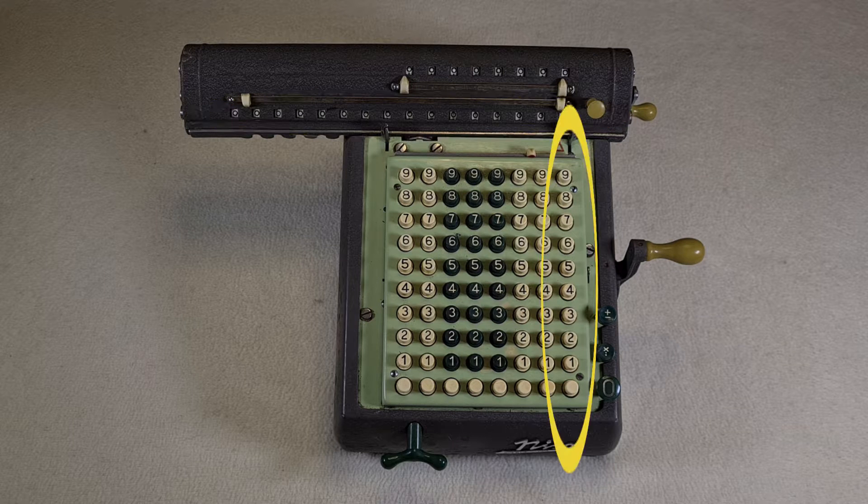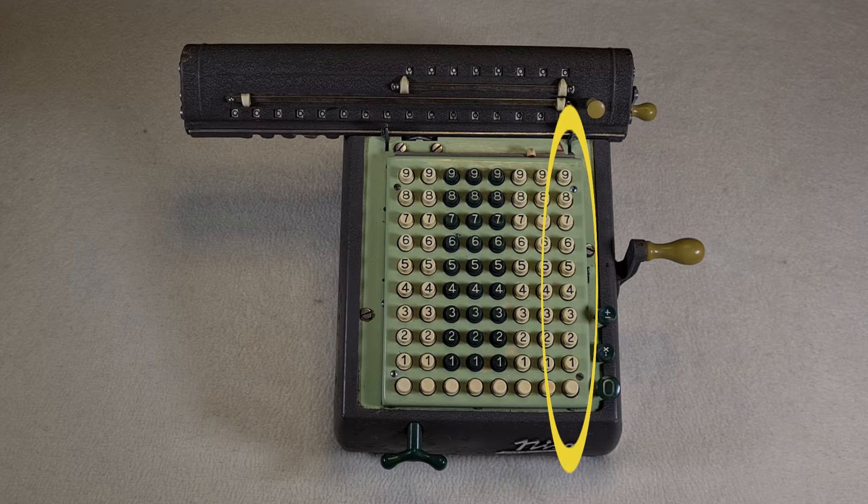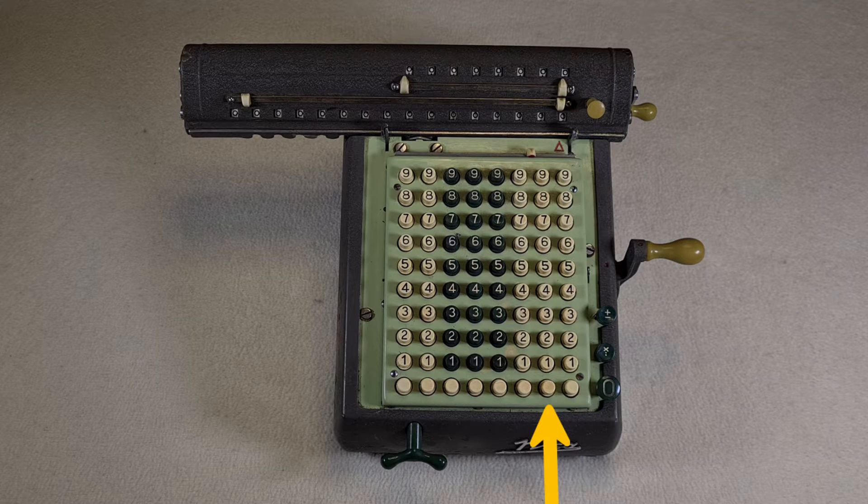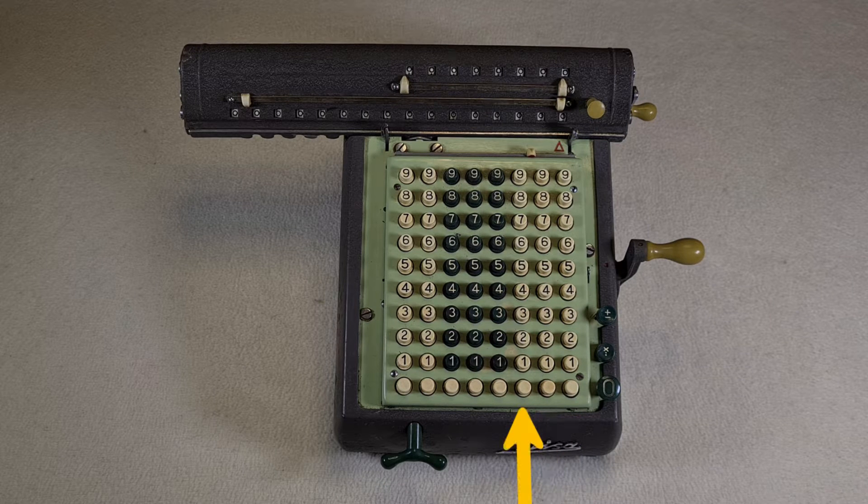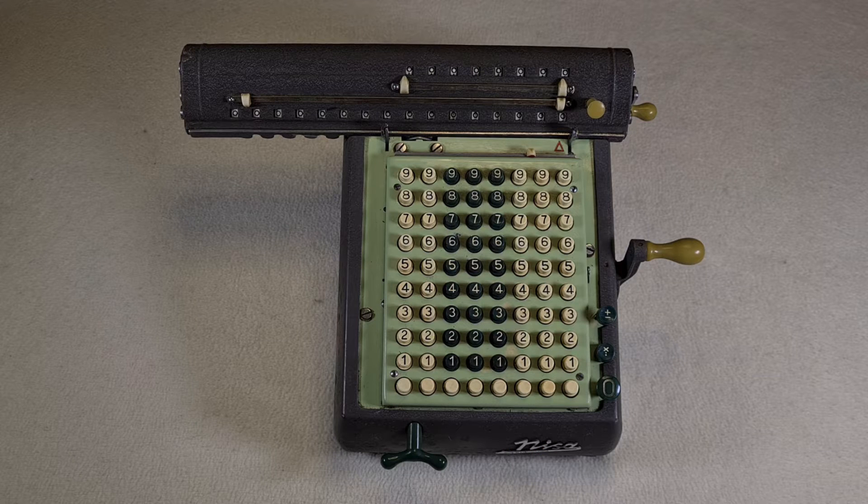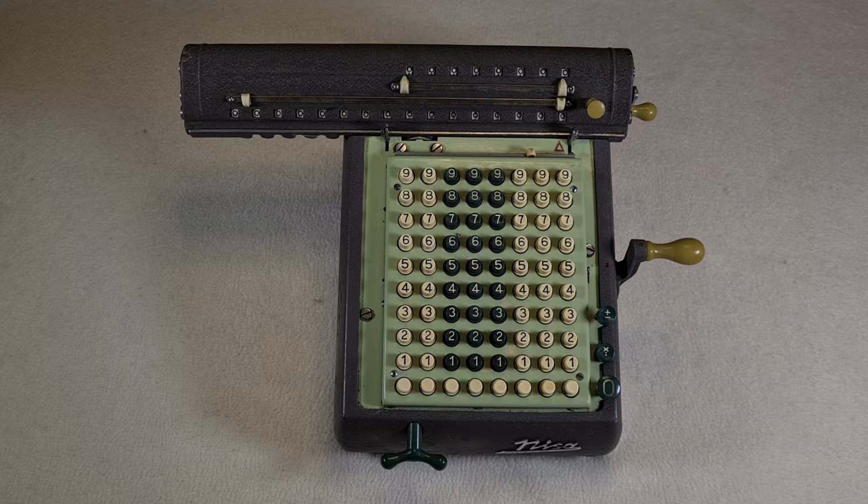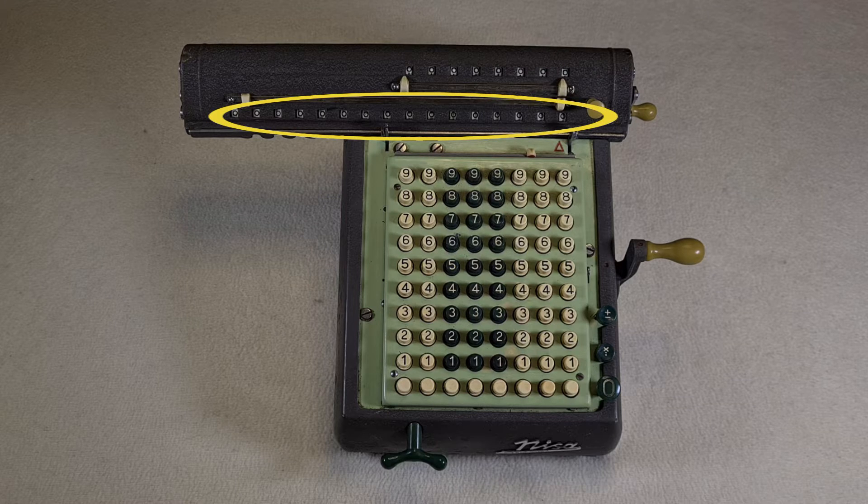Every column has the numbers from 1 to 9. The first column is for the units, the second for the tens, the third for the hundreds, etc. This display is for the number of calculations, and this display is for the result of the calculation.